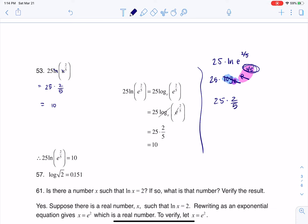This is, again, 25 times two fifths. And you do a little canceling. This ultimately becomes 10. And there's your answer. All right, thanks so much. Bye.